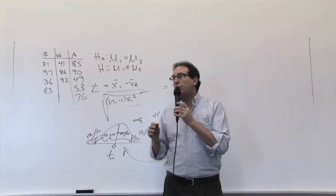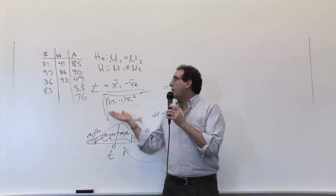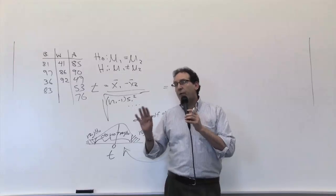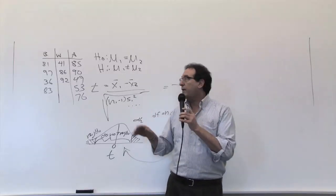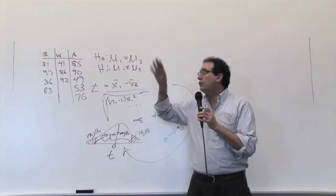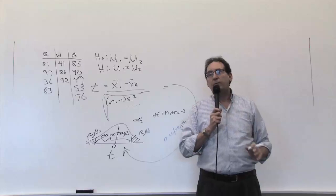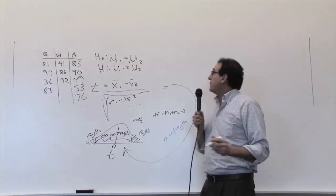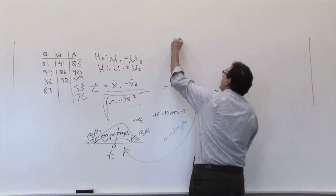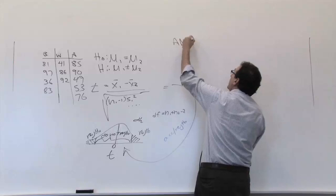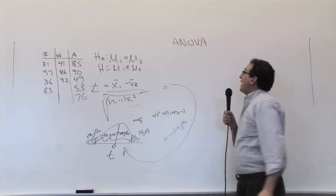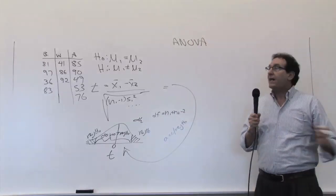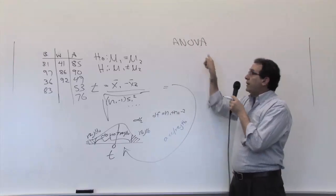It turns out there's a logical extension of chapter 10 that sort of works but does have problems. We're going to end up with a totally new approach that really embodies chapter 11, called the analysis of variance. By the way, you might as well get used to it — ANOVA is how it's pronounced, but it stands for analysis of variance.